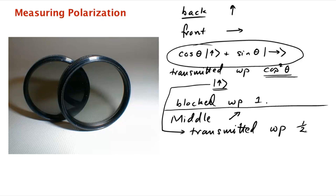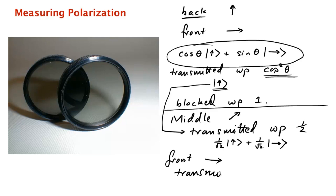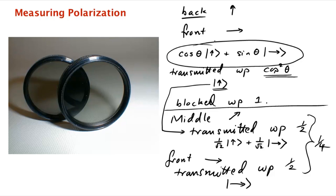But if the photon is transmitted through the middle lens, what's the new polarization? It's 1/√2 |vertical⟩ + 1/√2 |horizontal⟩ — a 45-degree orientation. Now it encounters the front lens, which is horizontally oriented. This diagonally polarized photon gets transmitted with probability one half, and its new polarization is horizontal. The net effect of interposing this middle lens is a one-quarter chance of transmission after the first lens. So by inserting the lens in the middle, you suddenly get a faint amount of light coming through — some nonzero chance of transmission.